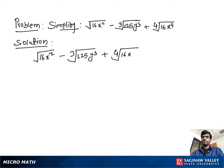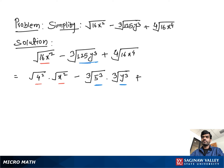Let's do a simplification. You can write square root of 4 squared times square root of x squared, which is 16x squared, minus cube root of 5 cubed times cube root of y cubed, which is 125y cubed, plus 4th root of 2 to the 4th times 4th root of x to the 4th, which is 16x to the 4th.